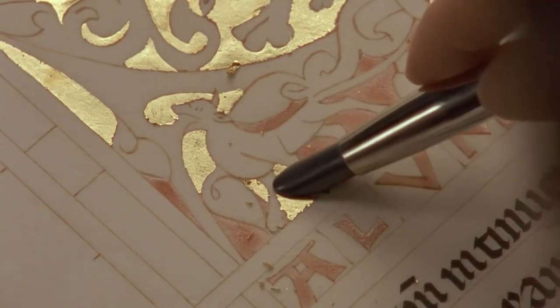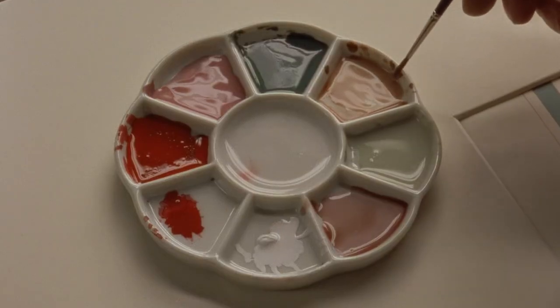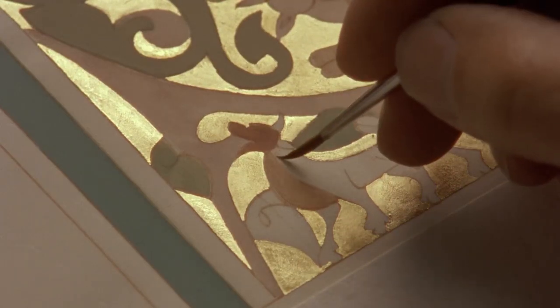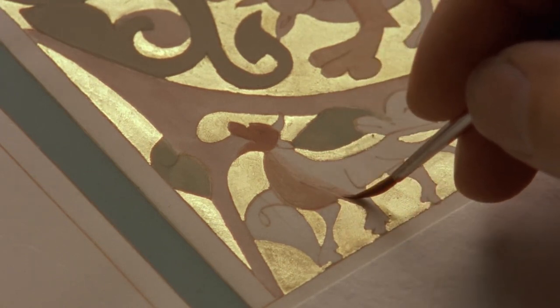After applying the gold leaf, the illuminator painted his design. Each color was made from a vegetable dye or a mineral substance, ground up and dissolved in liquid. The illuminator applied the paler shades first, then the darker tones.